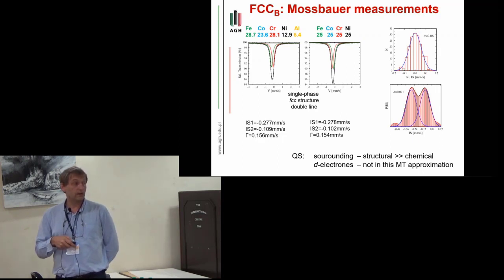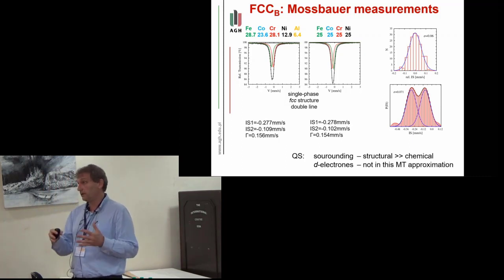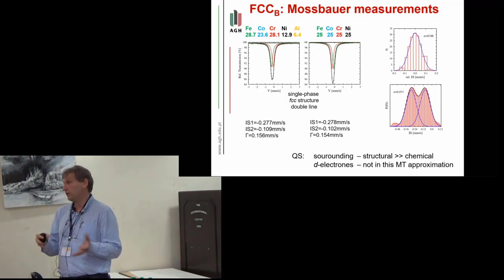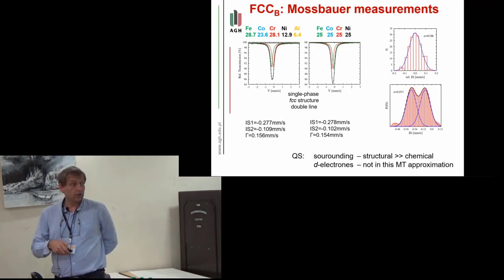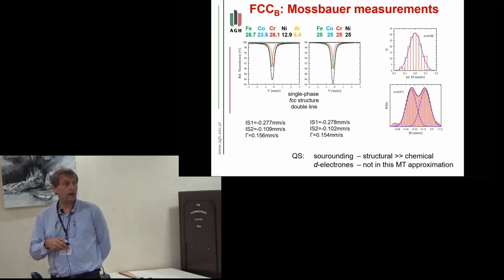But unfortunately it was not included in this version of our calculation, since we have used the muffin-tin type of potential and it is spherically symmetric, so we don't see anything connected with this polarization. So relevant calculations are in progress, but we have to finish them to fully explain why we observe a doublet in this case.